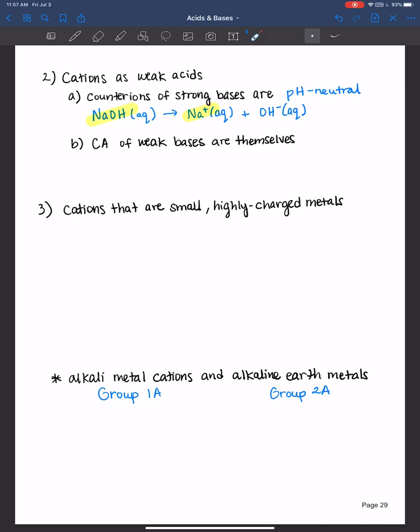Remember there's only six strong bases that you had to learn. They were the alkali metal cation hydroxides and the alkaline earth metal cation hydroxides as well. So group 1A, group 2A hydroxides.